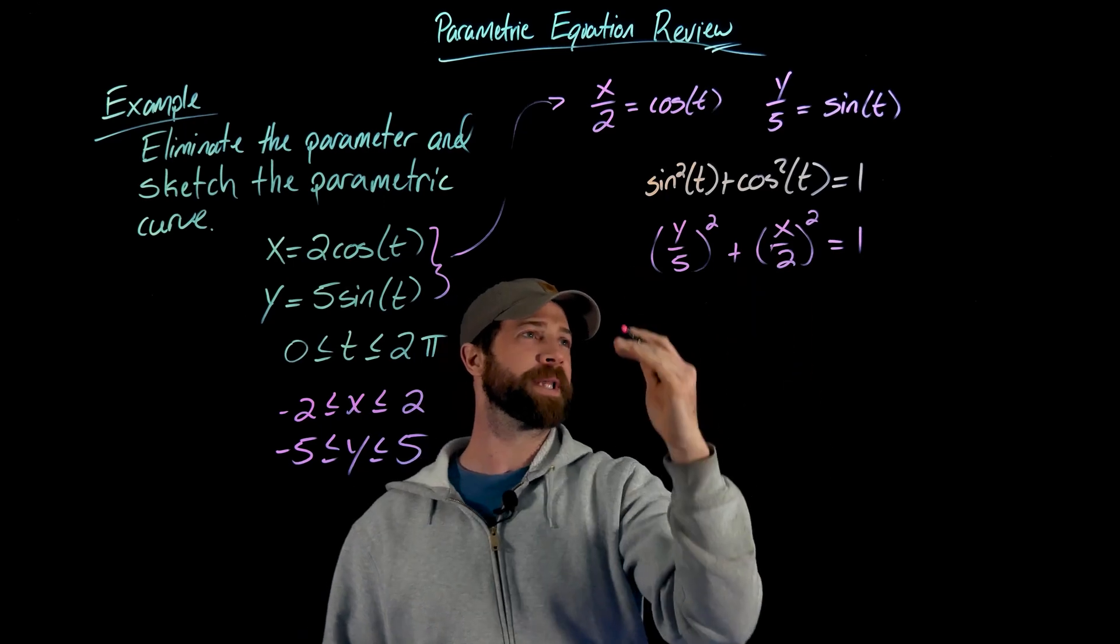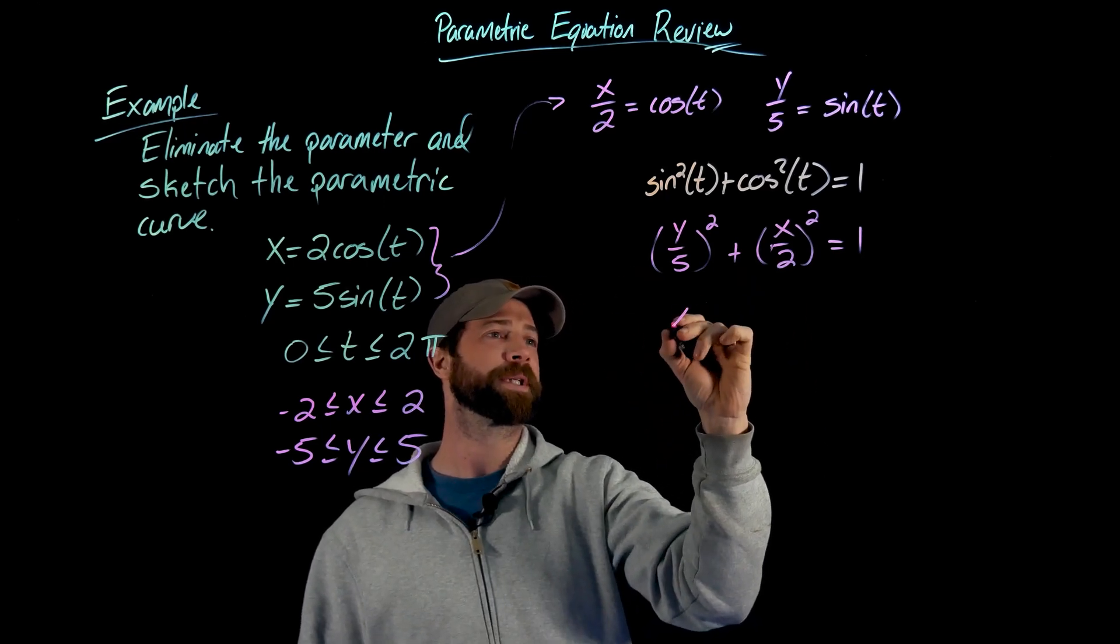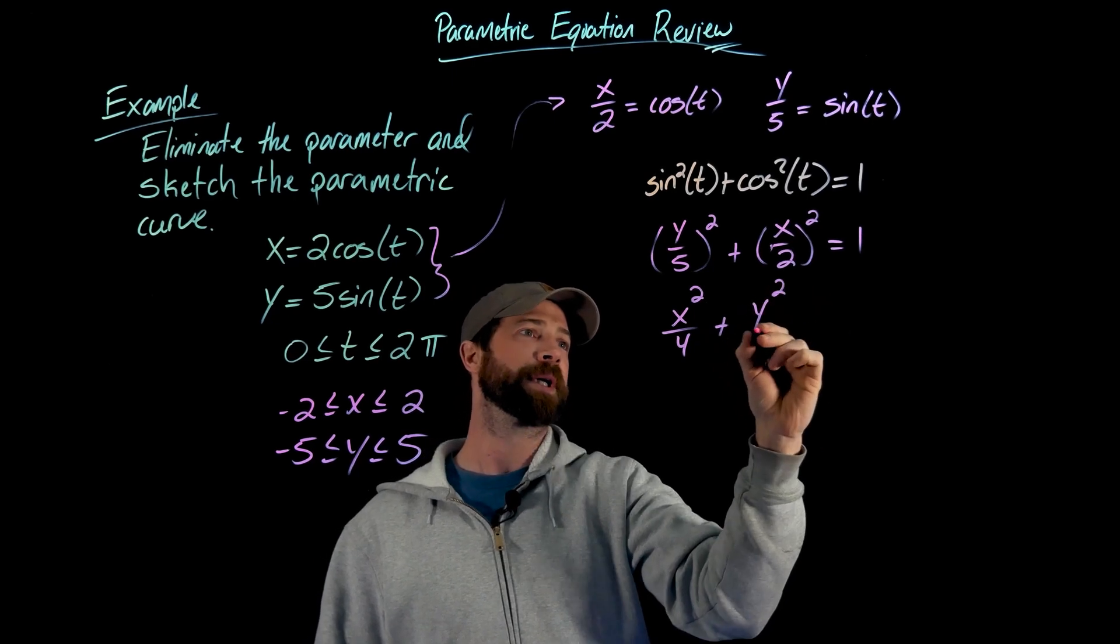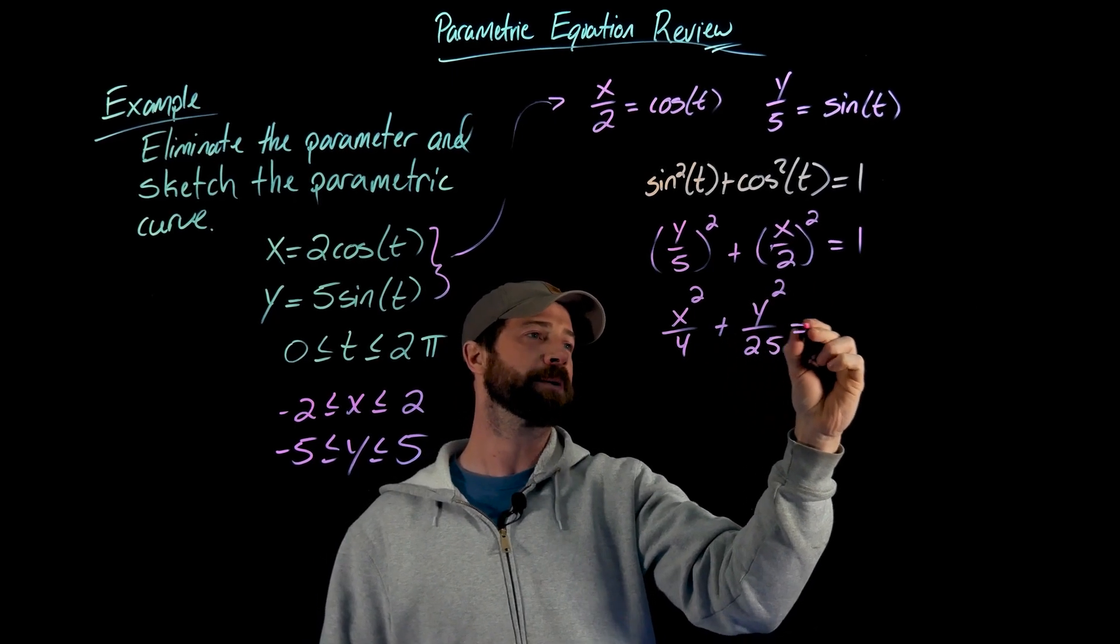Cleaning things up, I like writing the x term first, so I'll write this as x squared over four plus y squared over 25 equals one.